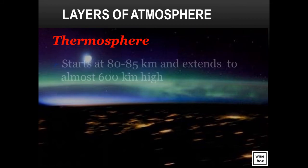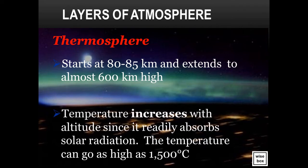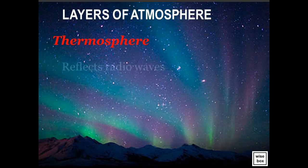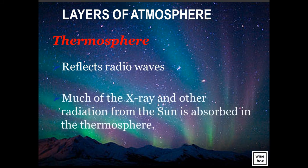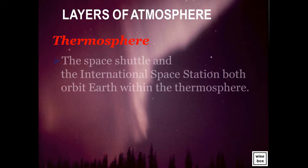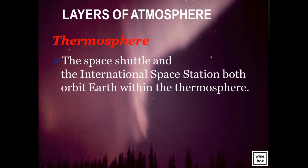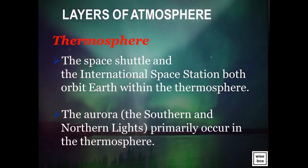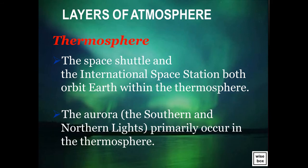Thermosphere. It starts at 80 to 85 kilometers and extends to almost 600 kilometers high. Temperature increases with altitude since it readily absorbs solar radiation. The temperature can go as high as 1,500 degrees Celsius. The thermosphere reflects radio waves, and much of the X-ray and other radiation from the sun is absorbed in the thermosphere. The space shuttle and the International Space Station both orbit Earth within the thermosphere. The aurora, or the southern and northern lights, primarily occur in the thermosphere.